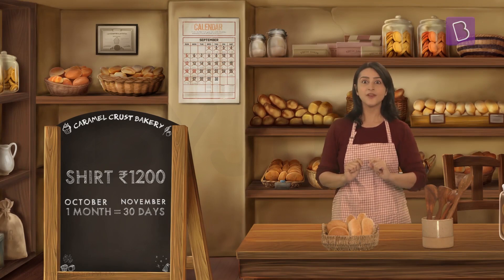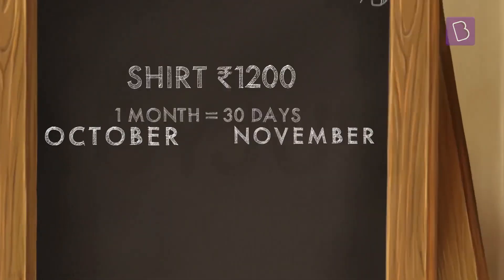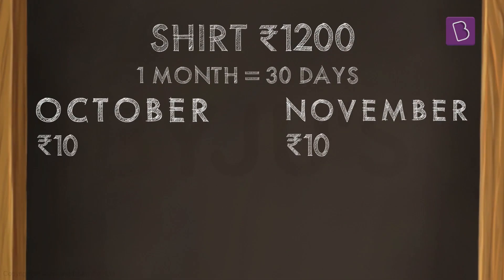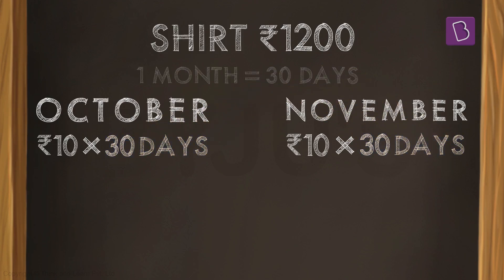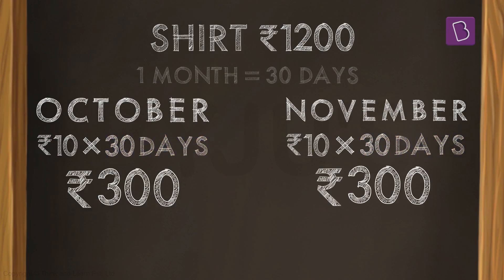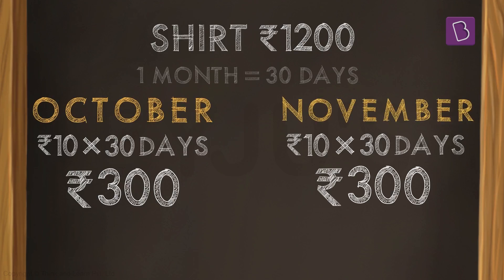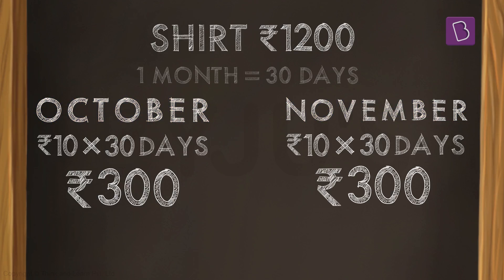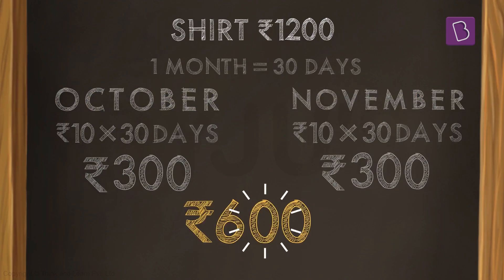What if I save 10 rupees a day? What will that add up to in 30 days? So 10 rupees per day for 30 days adds up to 300 rupees, and in two months it adds up to 600 rupees.